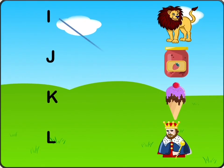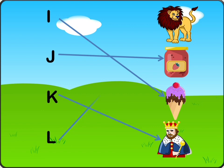I is for Ice Cream. J is for Jam. K is for King. L is for Lion.